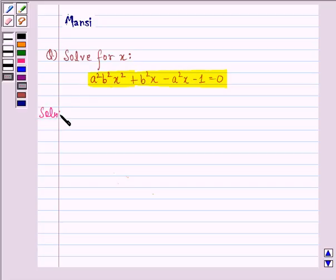Let us see the solution to this question. We have a square b square x square plus b square x minus a square x minus 1 equals to 0.